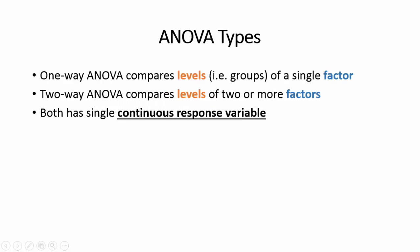In the following slides, we address two main types of ANOVA: one-way and two-way ANOVA. The one-way ANOVA compares levels or groups of a single factor. Two-way ANOVA compares levels of two or more factors. Remember, both types have a single continuous response variable.